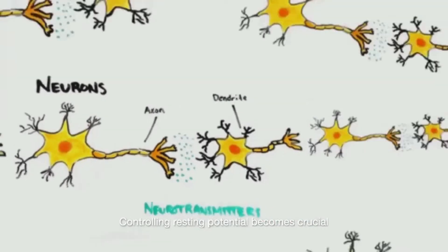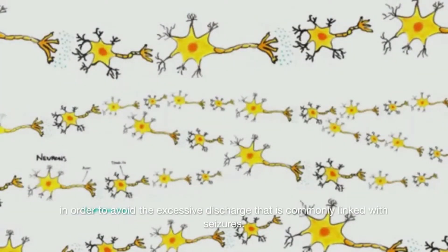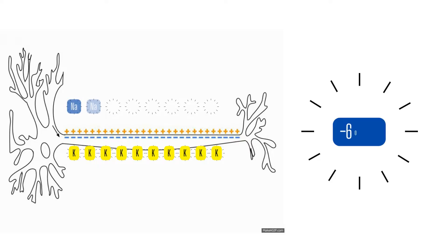Controlling resting potential becomes crucial in order to avoid the excessive discharge that is commonly linked with seizures. A neuron normally has a high potassium concentration, as well as a high extracellular sodium concentration and other ions, resulting in a net transmembrane potential of minus 60 mV.